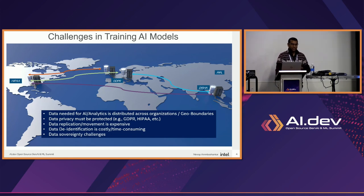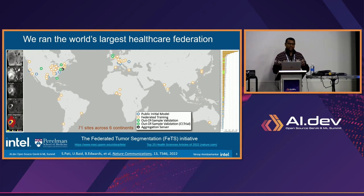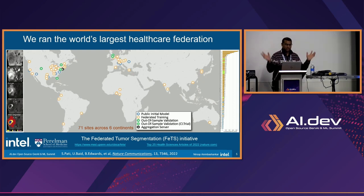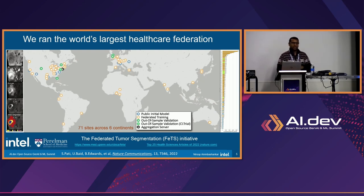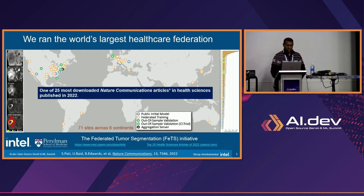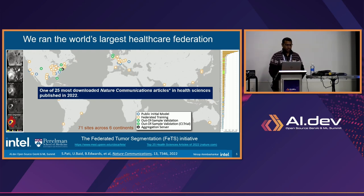You also need to do data de-identification — you don't want to identify who is sending data when you train on it. There are also data sovereignty challenges, touched on in the previous talk, where every country owns its data. As a teaser: we actually ran the world's largest healthcare federation with OpenFL — 71 sites across six continents and 20-plus countries — called the Federated Tumor Segmentation Initiative, which looks at brain tumor segmentation. Last year, in 2022, this was one of the top 25 most-downloaded Nature Communications papers in healthcare.